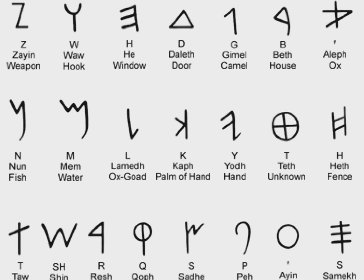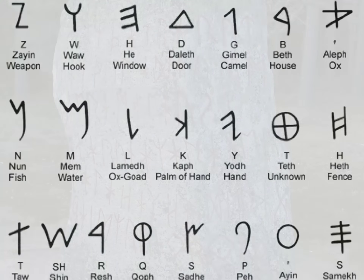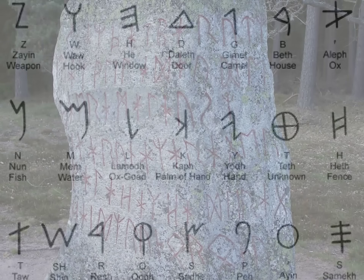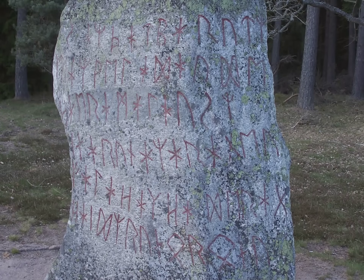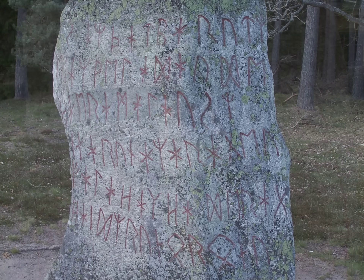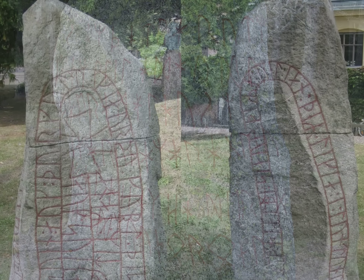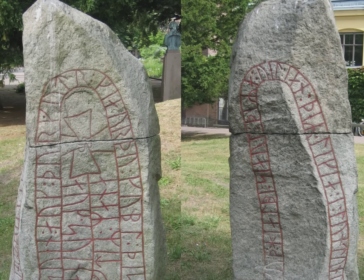The runes were made of straight lines to make the characters suitable for cutting into wood or stone. The earliest runic inscriptions on stone are dated to the late 3rd century AD, although it is probable that runic alphabets had been used for some centuries prior.